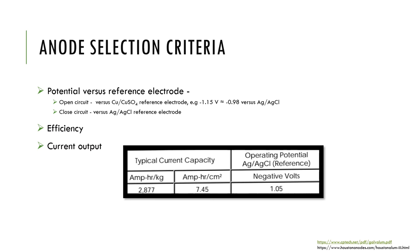The potential is of two types: open circuit potential and closed circuit potential. The open circuit potential is measured with respect to the copper-copper sulfate reference electrode, and this is done in the absence of any externally applied potential or current density. Closed circuit potential is measured when that anode is connected to the equipment that is to be protected.